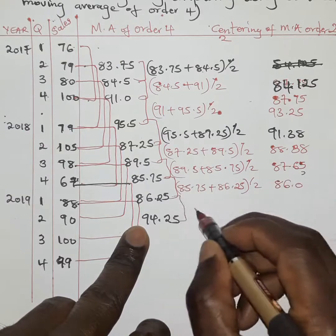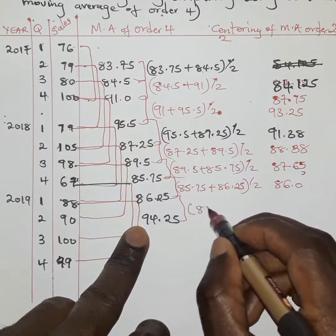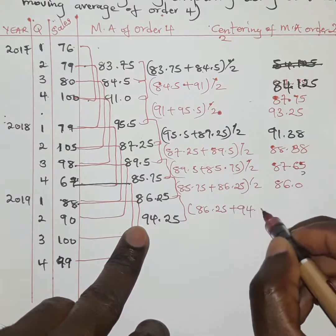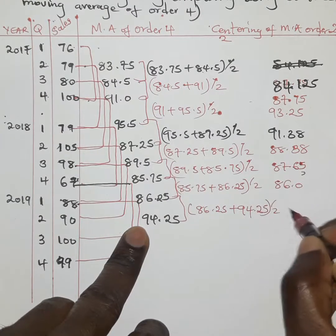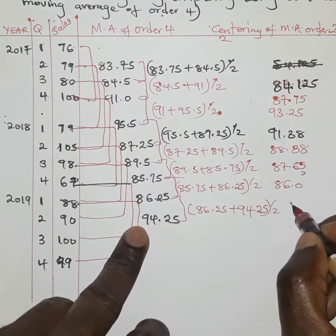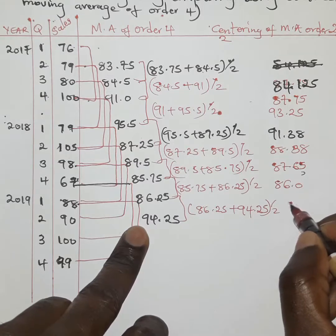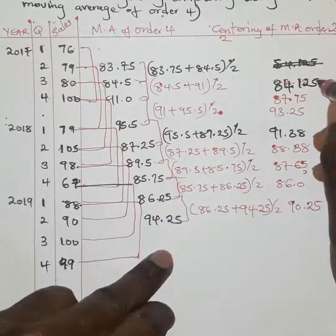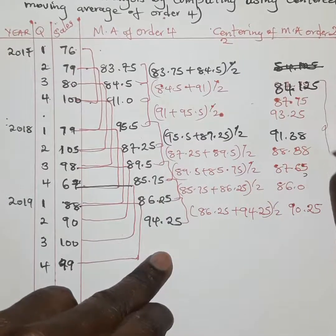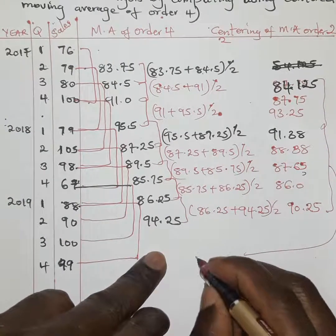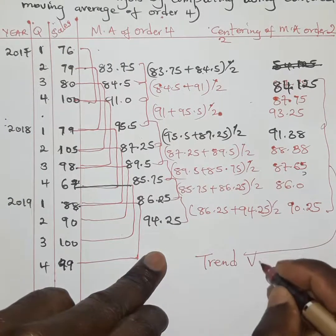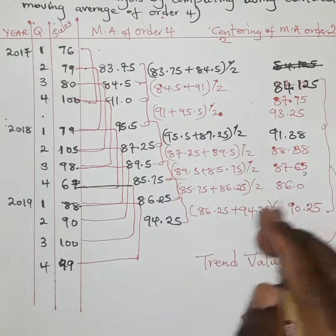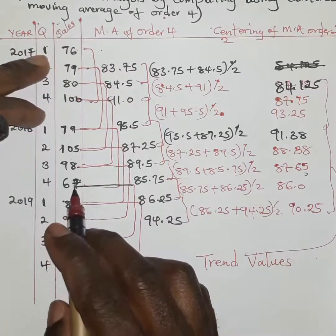The last pair: 86.25 plus 94.25, divided by two, gives 90.25. These resulting values are known as the trend values. They tell us the approximated sales for every quarter for the next period.